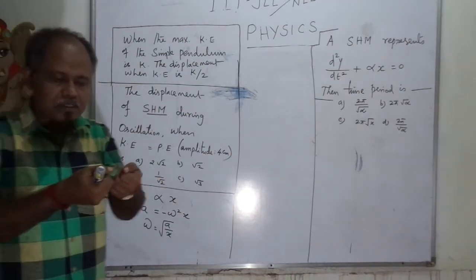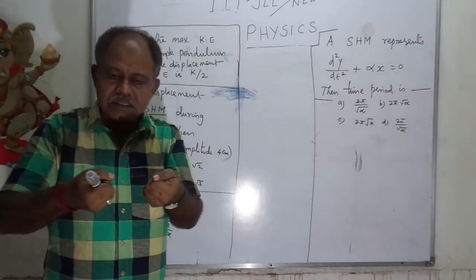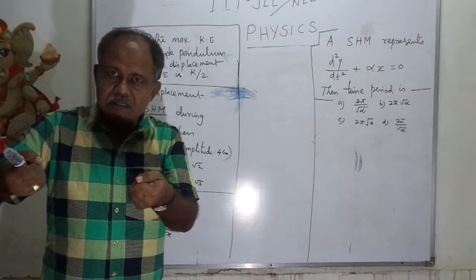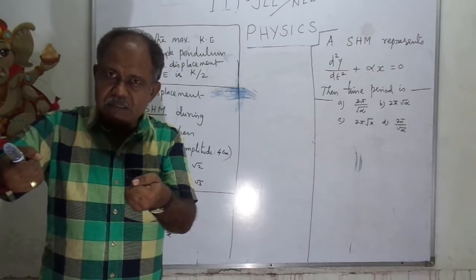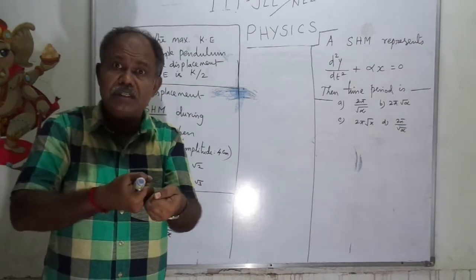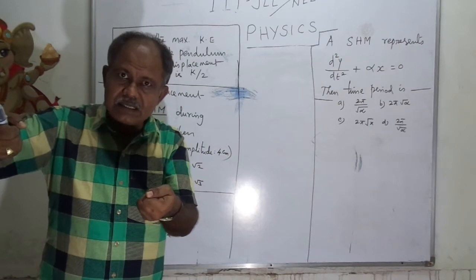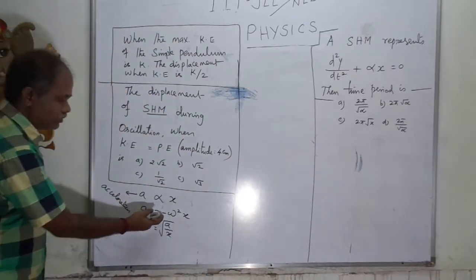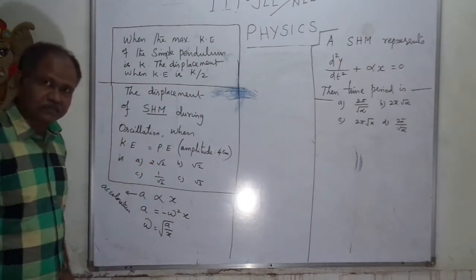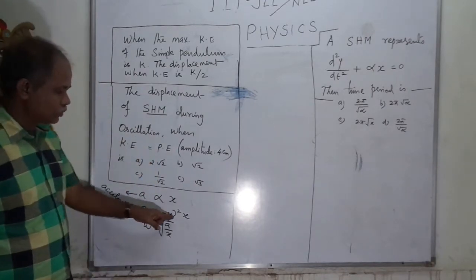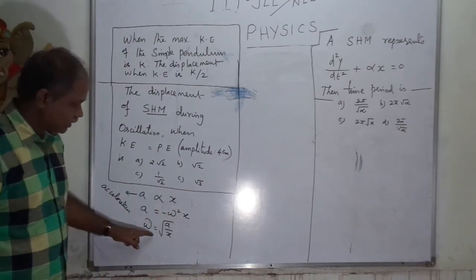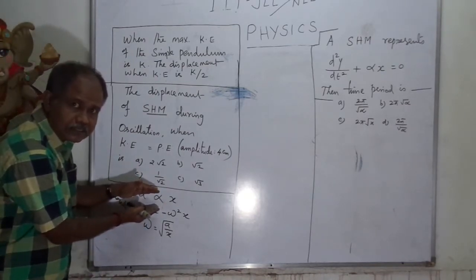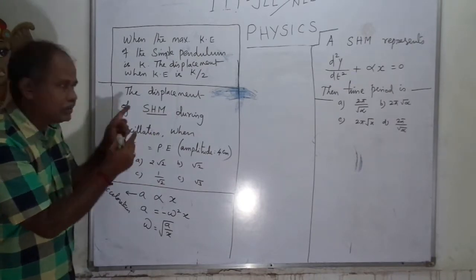If you take a spring system and give an external force, that force gives acceleration in one direction. At the same time, the displacement is in the opposite direction — the spring tends to return to its original position. The displacement is opposite to the restoring force, that is why we introduce the minus sign. So a is equal to minus omega squared x. Omega is the angular frequency, equal to the square root of a by x. If that formula is satisfied, then that oscillation is called simple harmonic motion.